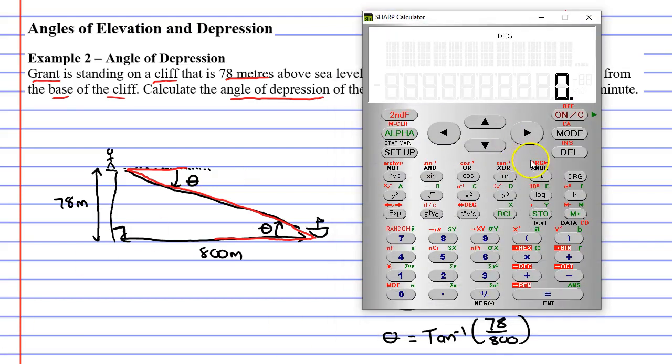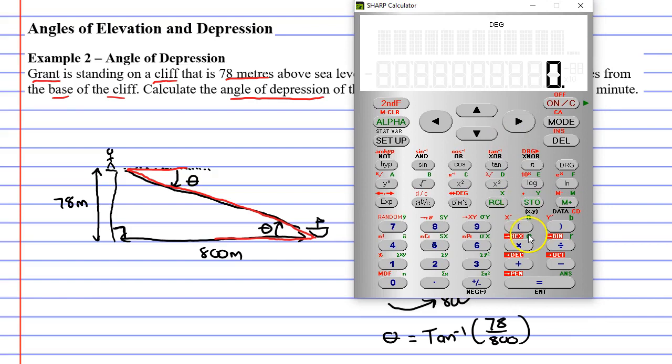And now what we need to do is bring up our calculator and go second function tan, and we get tan with the negative one. Making sure you put your brackets in, very important you do this: 78 divided by 800, and close our brackets.